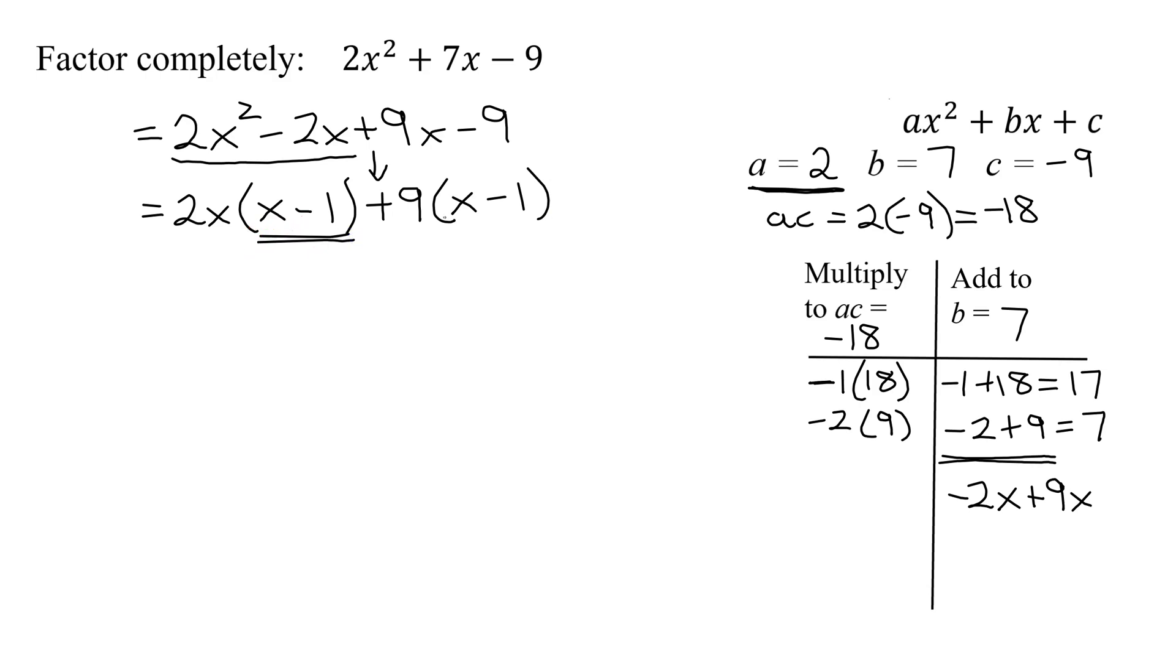Now, is this binomial the same as this one? Yes. Therefore, factoring by grouping worked. And I pull out my common binomial factor of x minus 1. And what does it leave behind? 2x plus 9 to go in my second parentheses.